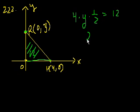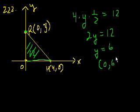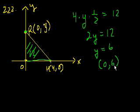So you get 2y is equal to 12, y is equal to 6. So the coordinate of R is 0 comma 6. They just asked what is the y coordinate of point R, so that's 6. And that's choice B.